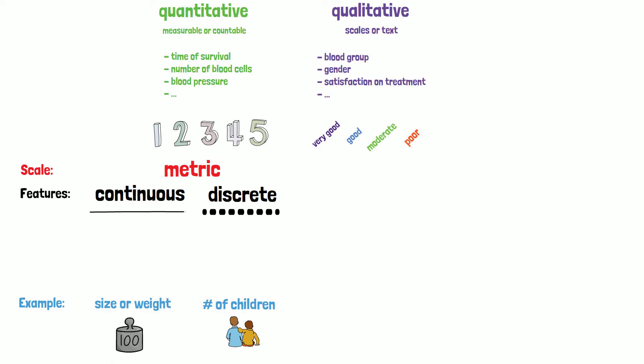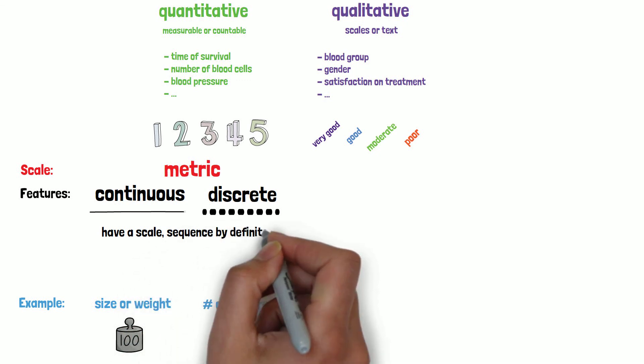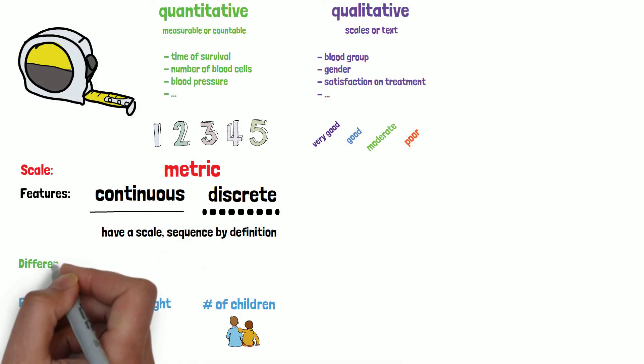All metric variables have a scale and therewith a sequence by definition. Differences are therefore interpretable.